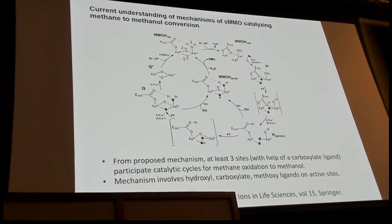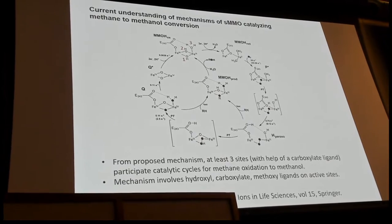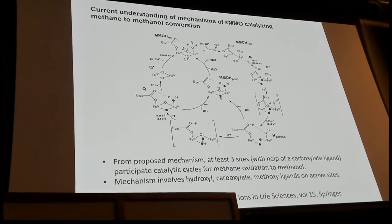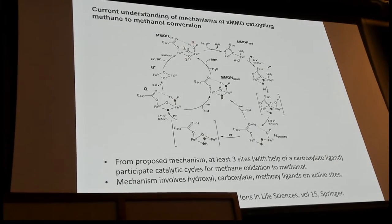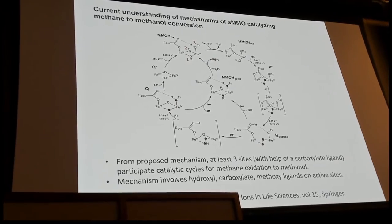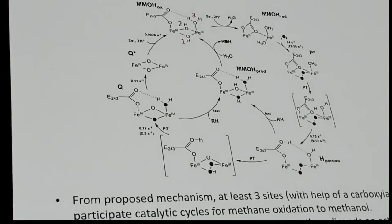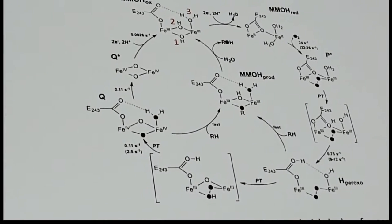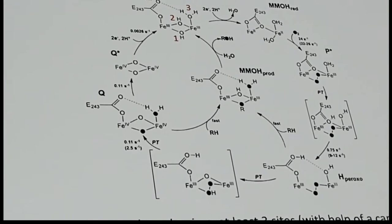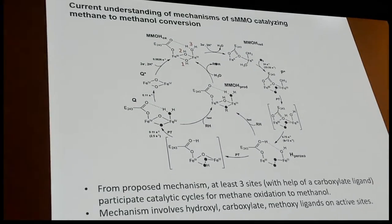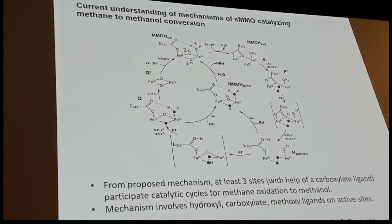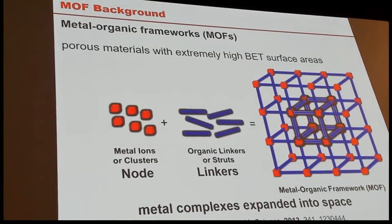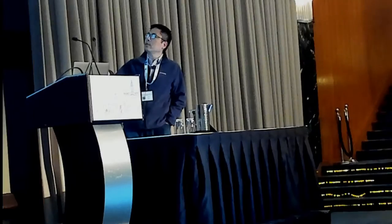These structures are characterized under resting conditions, when the enzyme is not working. But under reaction conditions, the mechanism becomes very complicated. Most of the intermediates cannot be monitored by experiments — they are proposed structures. Most people are more interested in intermediates such as the iron-oxo groups.